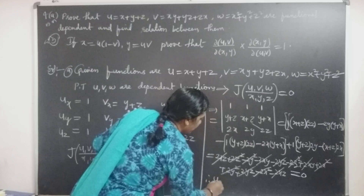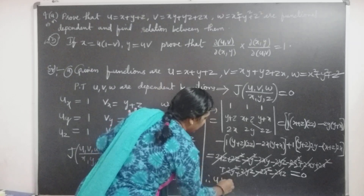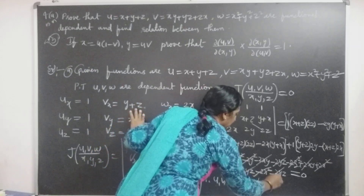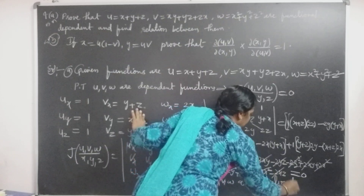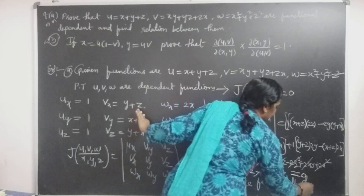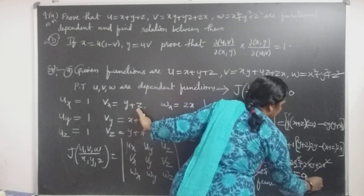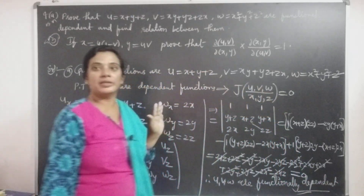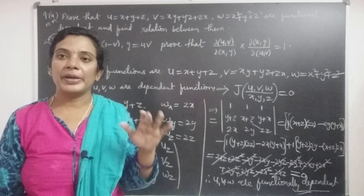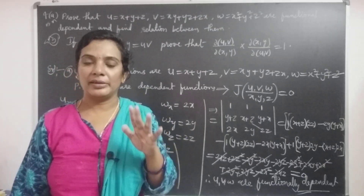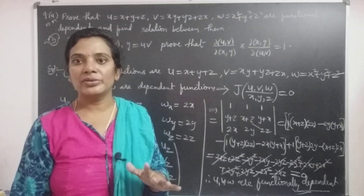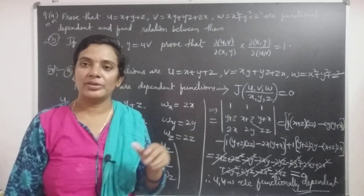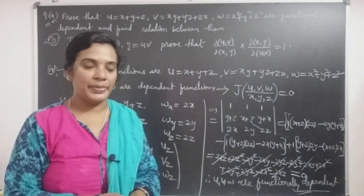Therefore, U, V, W are functionally dependent. This is the procedure. Dependent means the Jacobian equals 0. If the Jacobian is not equal to 0, the functions are independent.